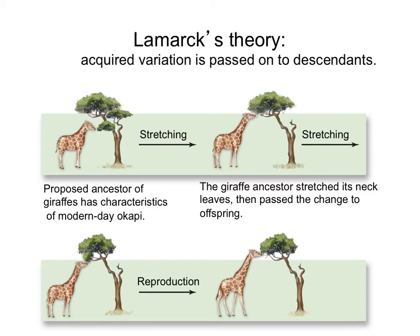The common example for this is a giraffe that stretches her neck to reach the higher branches so that she can get more food, and that advantage will be passed on to the offspring. But now we know, based on what we know about genetics and inheritance, that traits we acquire during our lifetime are not passed on to our offspring. Only traits that are coded in our genes are passed on. An analogy of Lamarck's theory would be to say, if you go to the gym often and have big muscles, then your babies will be born with big muscles. We know that's not true, so Lamarck's theory is not possible.